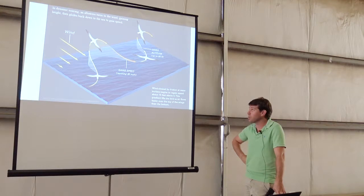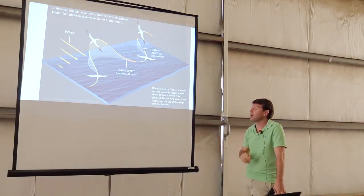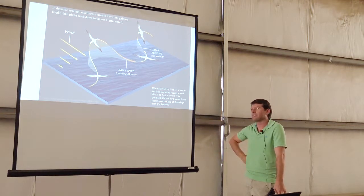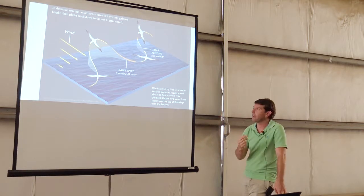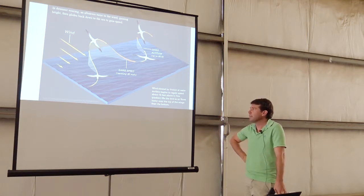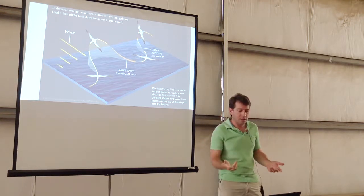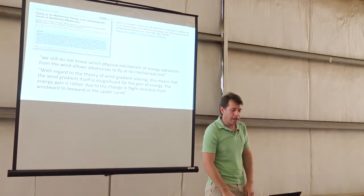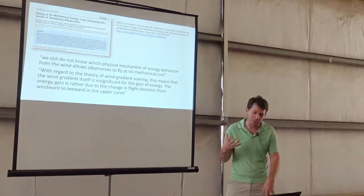This is an albatross, and it flies literally thousands of miles. It sleeps on the wing, it locks its wings, and it can fly around the world. Yeah, it actually does go around the world, around the Antarctic. Can we use dynamic soaring to soar around the world for cargo?